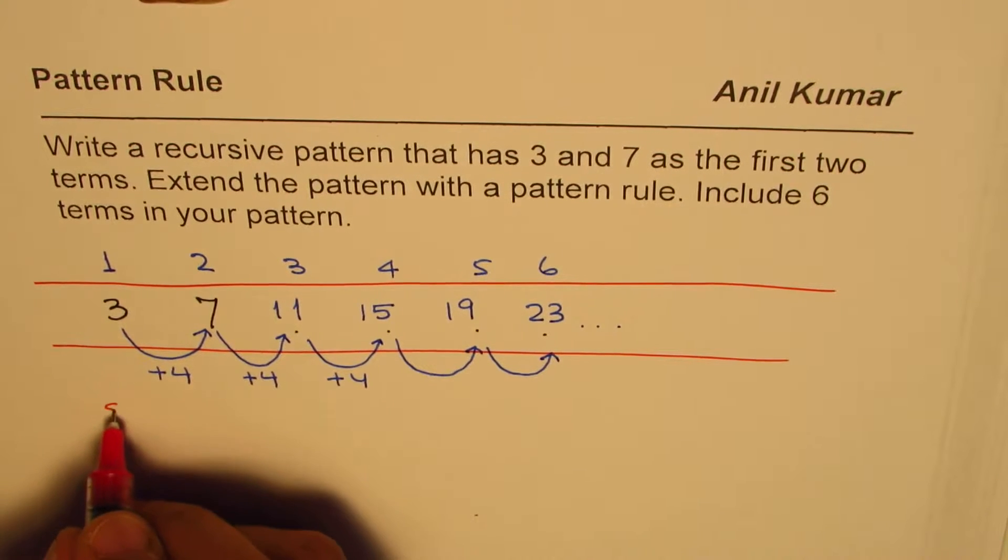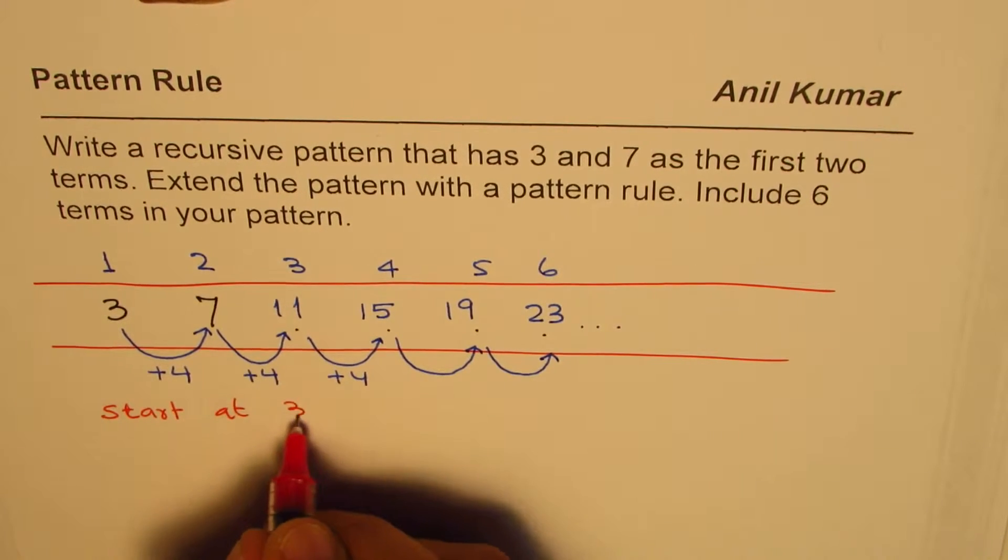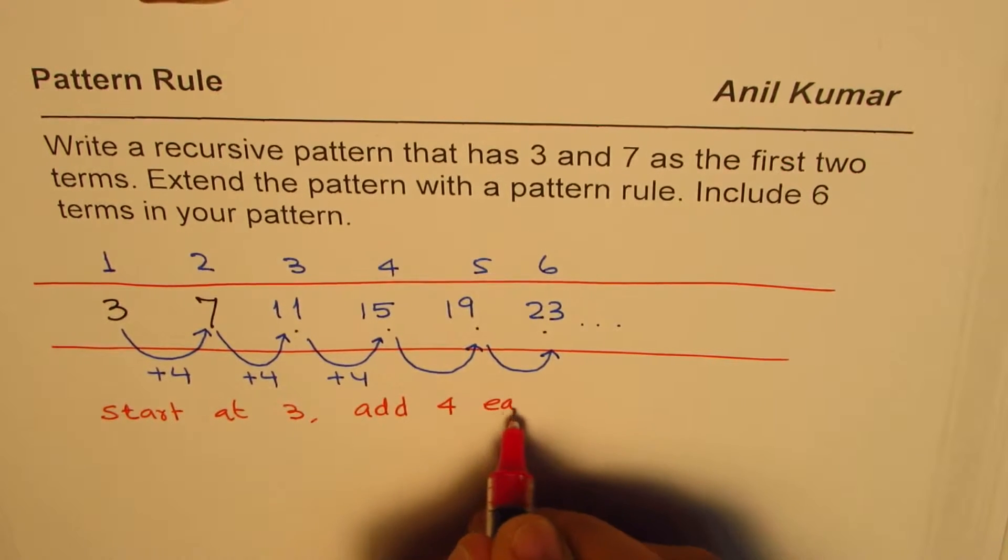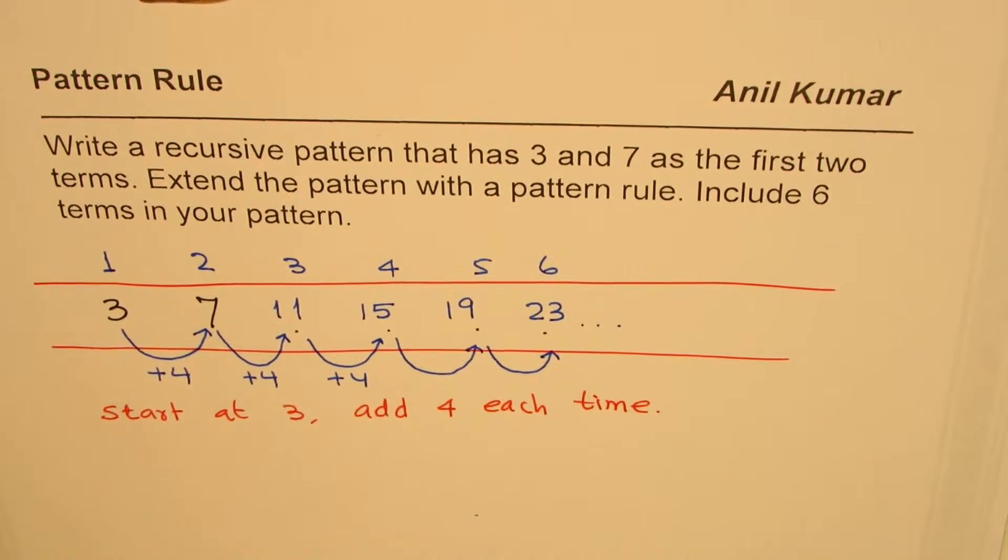And again we can add four: nineteen, nineteen plus four is twenty-three. So likewise we can increase our pattern. The rule here is start at three, add four each time.